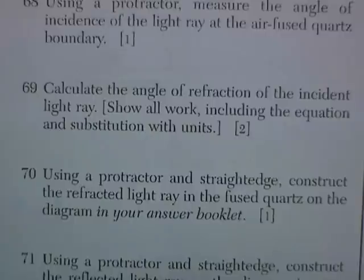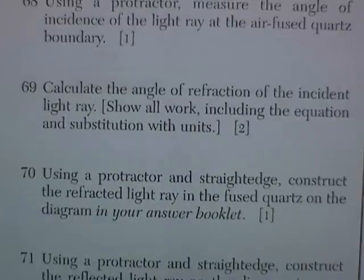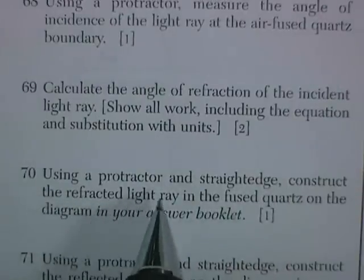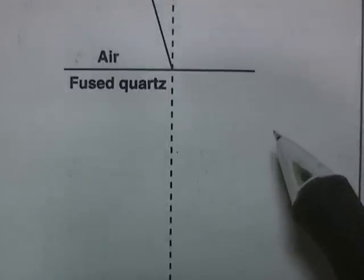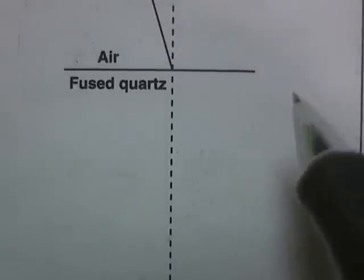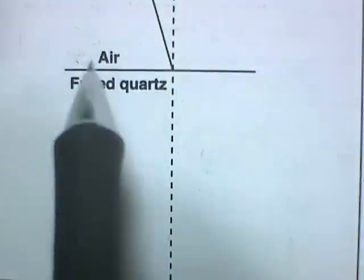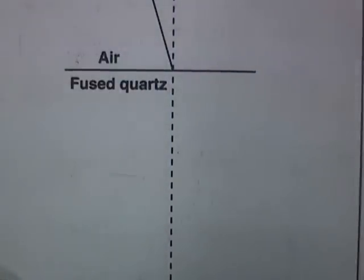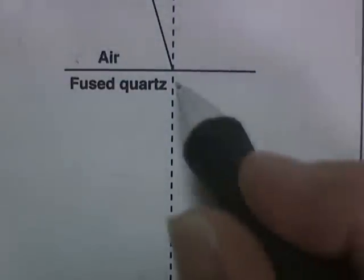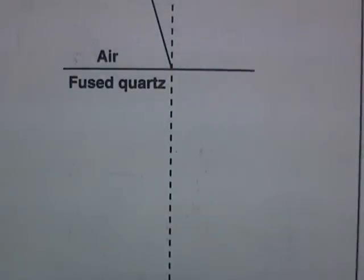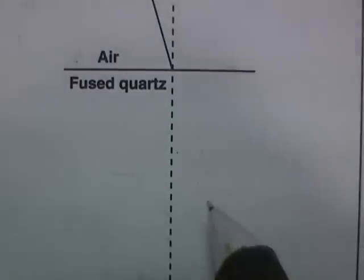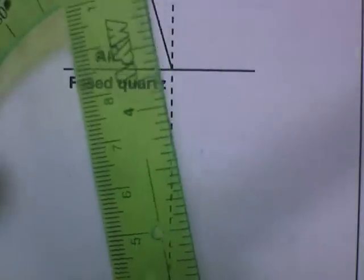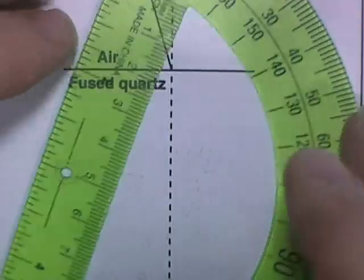Using a protractor and straight edge, construct the refracted ray in the fused quartz. Now I've got to construct an angle of about 11.5. Here's an important point: if you struggle with question 69 and come up with the wrong answer, let's say 30 degrees, if you then construct it to 30 degrees you'll get this point because this is graded based on your answer from the previous one.